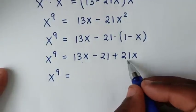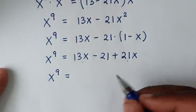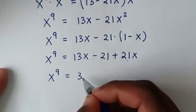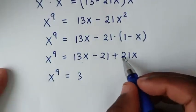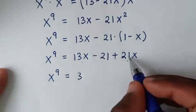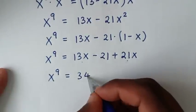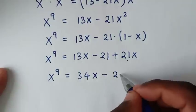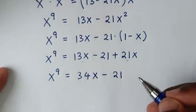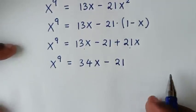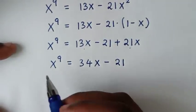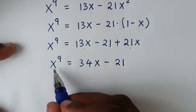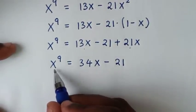Combining like terms: 13x plus 21x equals 34x. So x⁹ = 34x minus 21. Now we substitute back the original value of x, which equals square root of 5 minus 1 over 2.